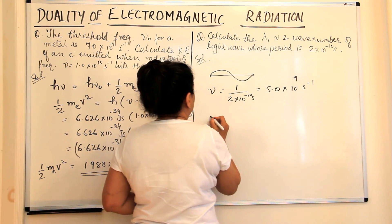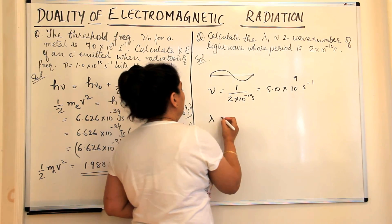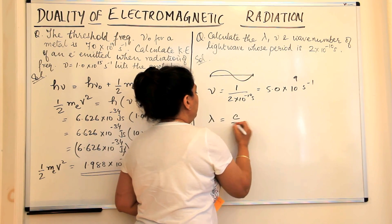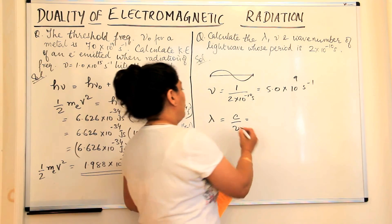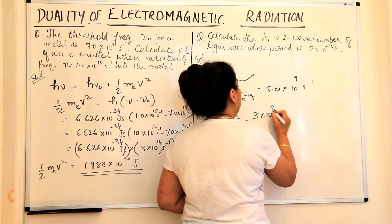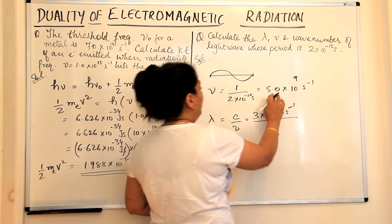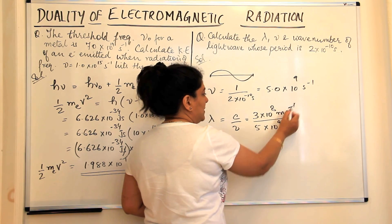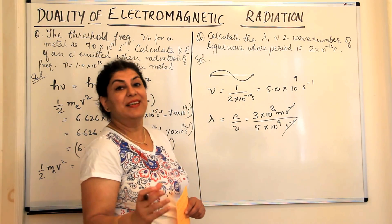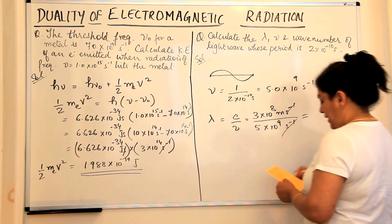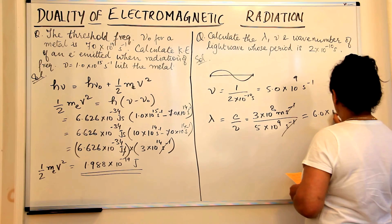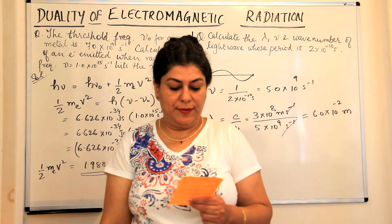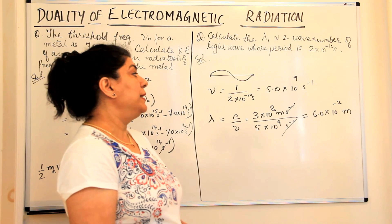Now we have to calculate the wavelength. We use the formula c = νλ, therefore λ = c/ν. c is the speed of light, which is 3 × 10⁸ meters per second, and frequency we just calculated is 5 × 10⁹ per second. The per second units cancel and you get the wavelength in meters. This comes to be equal to 6.0 × 10⁻² meters.